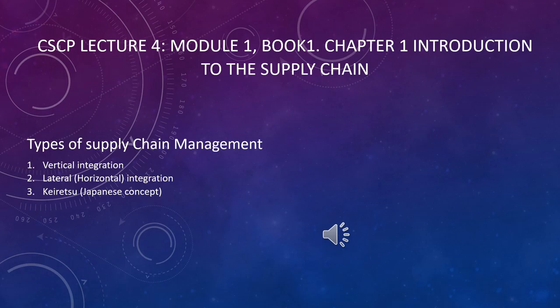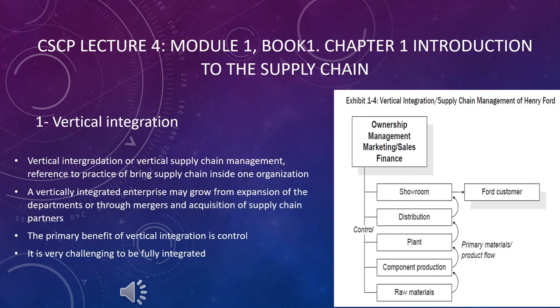Today we will study about the types of supply chain management. There are basically two types: one is vertical integration and one is lateral or horizontal integration. There is also another Japanese concept which we will study in detail next.